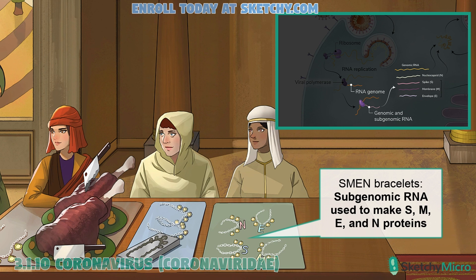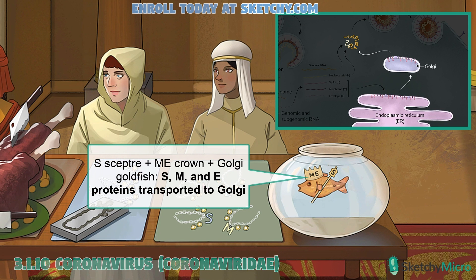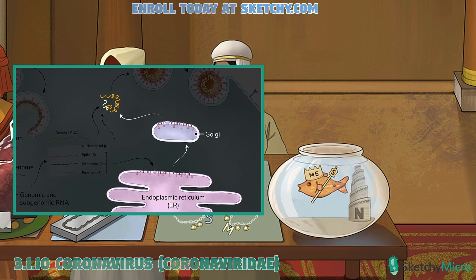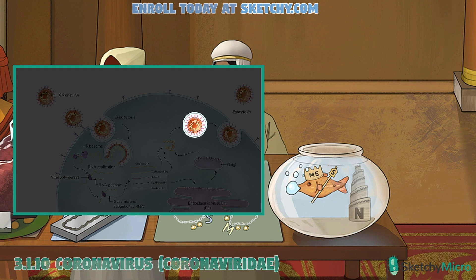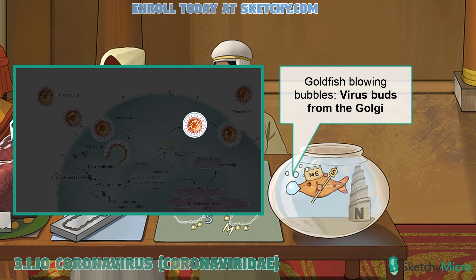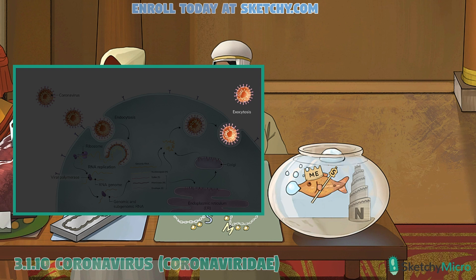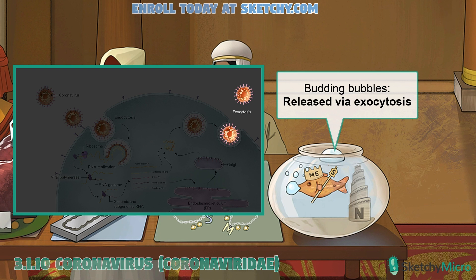These newly synthesized structural proteins are the building blocks for the next generation of viruses. The S, M, and E proteins are translated at the endoplasmic reticulum, where they're folded and packaged into vesicles for transport. From there, they're shipped off to the Golgi. Meanwhile, in the cytoplasm, the N proteins associate with freshly transcribed positive sense genomic RNA, forming the helical nucleocapsid. Coronaviruses are a little different in that they bud from the Golgi instead of the cell membrane. The finished virions are then transported through vesicles to the cell membrane, where they're released via exocytosis.